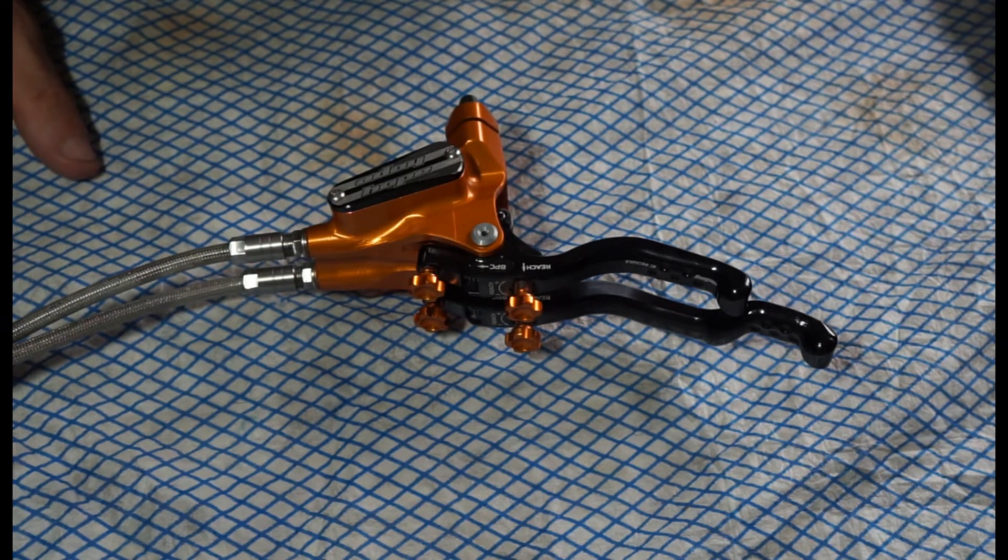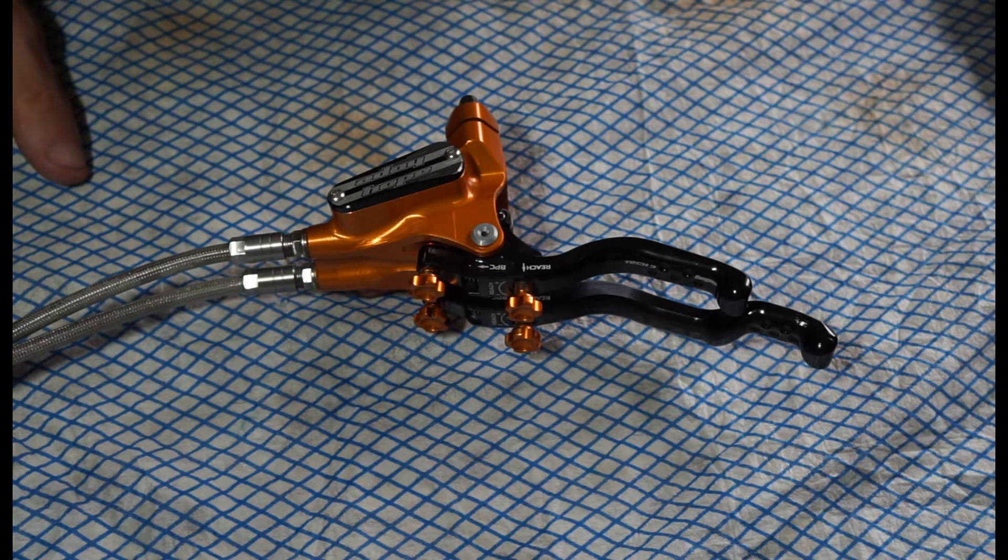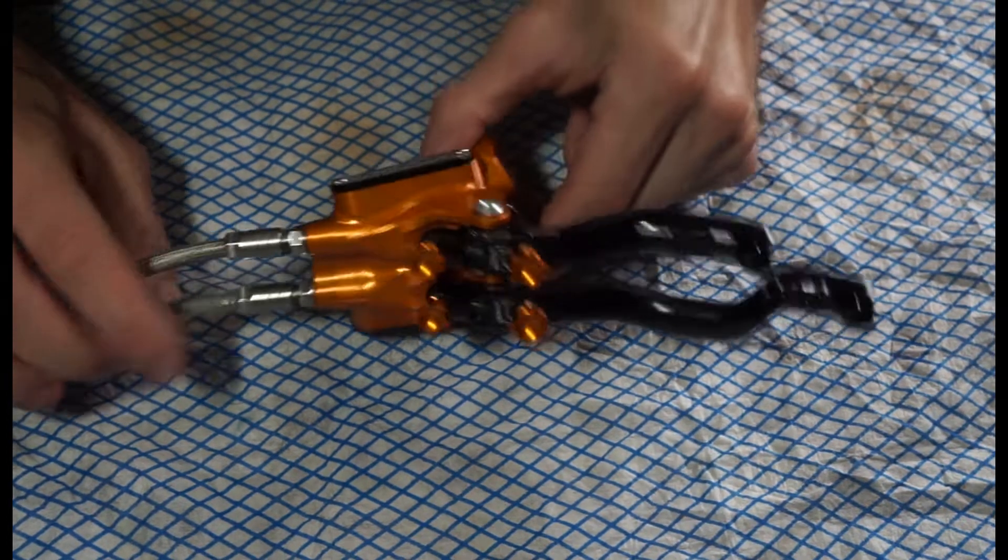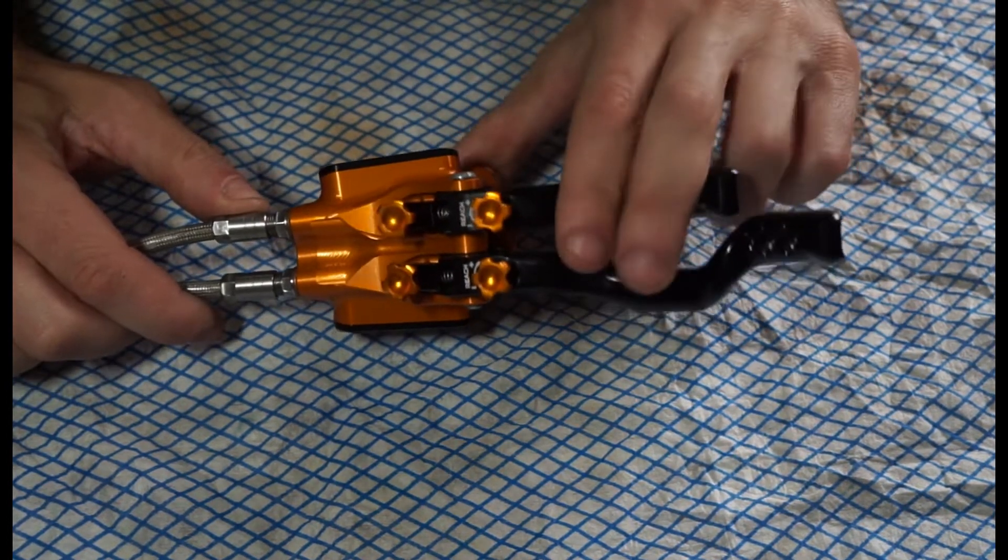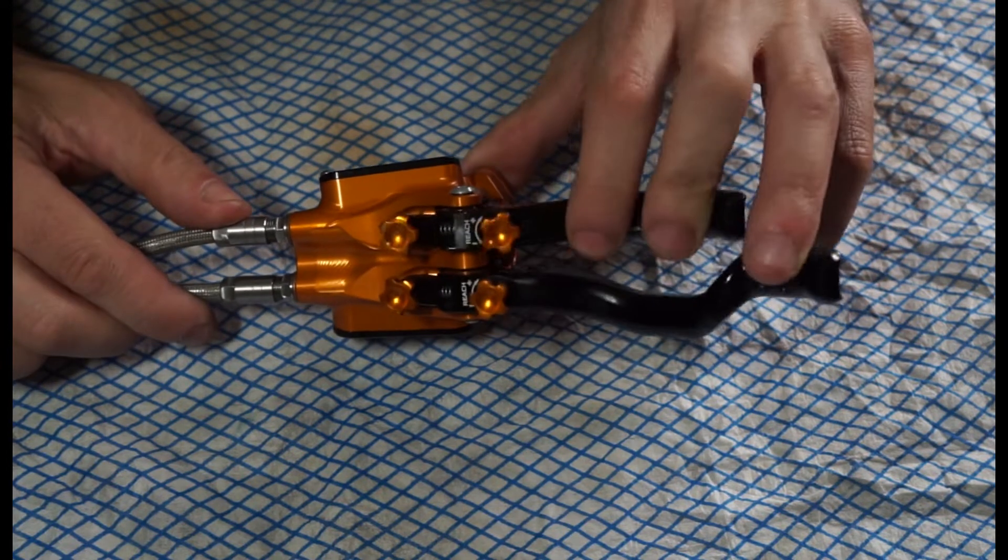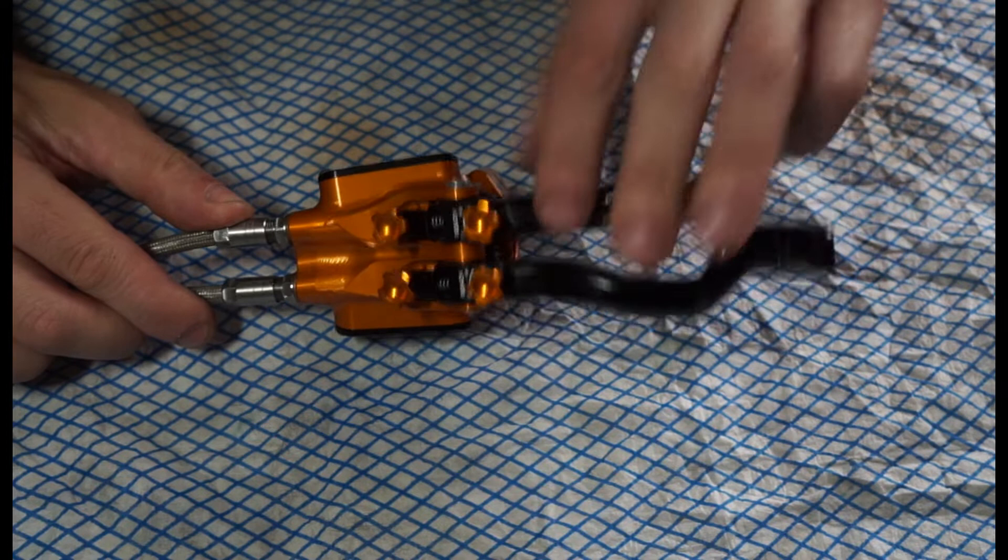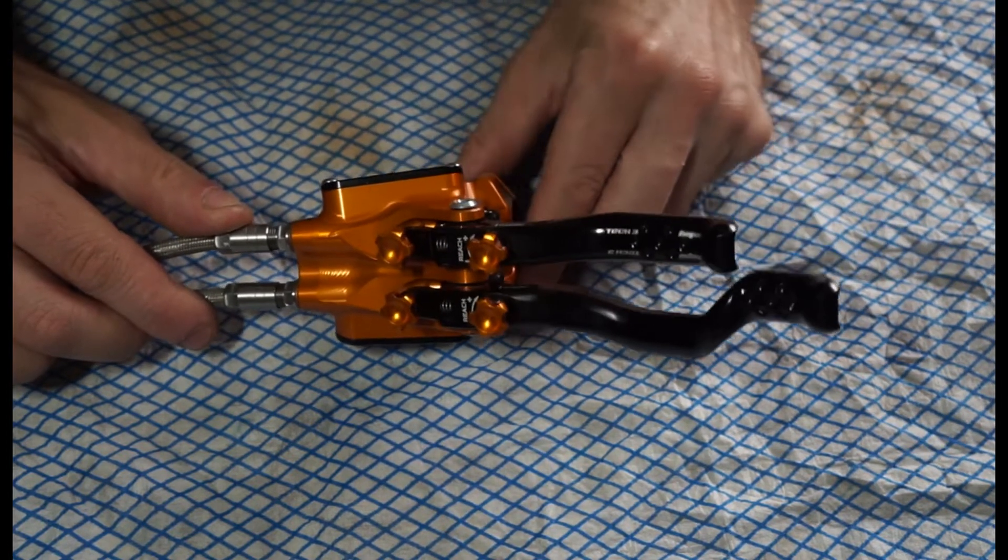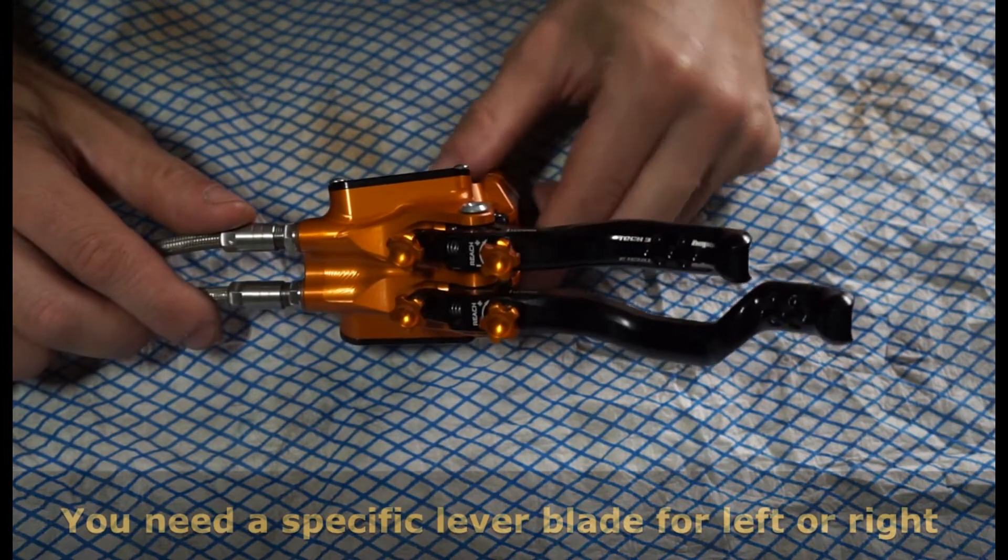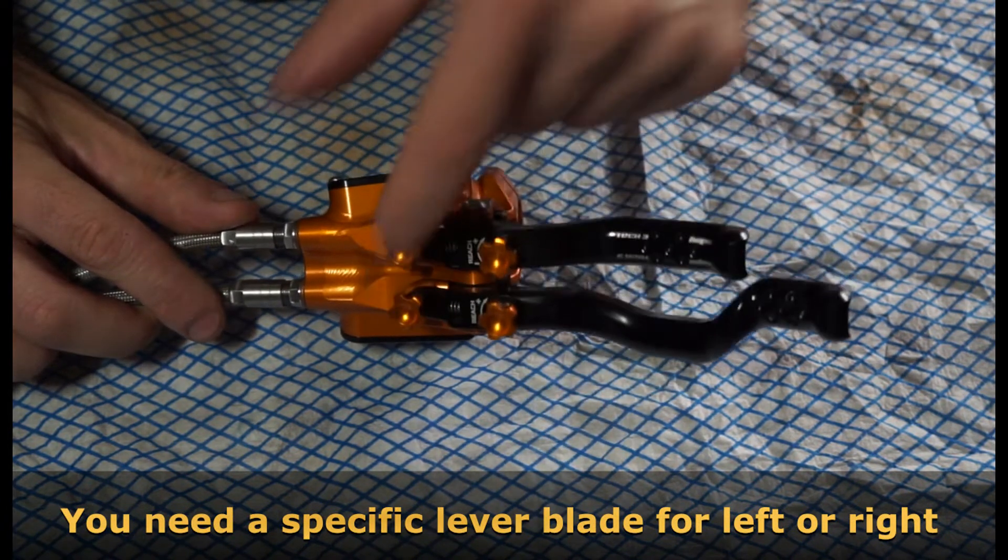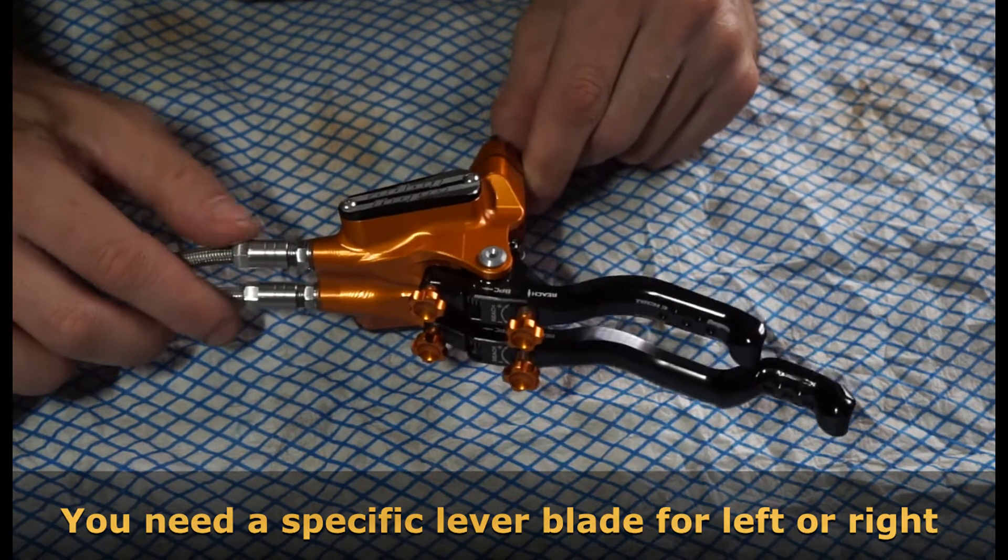What we're going to do in this video is strip down the Hope Duo lever. I believe Hope developed this for people that had hand injuries, so you can run your front and rear brake on one side of the handlebars and just use one hand for that. You can actually flip it over and use it left or right. You would just have to take the pivot out and swap the levers over. So what we're going to do is strip it all down.